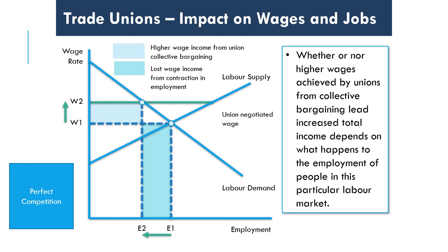Because the light blue area is slightly smaller than the darker blue area, economists would suggest that in perfect competition the impact of unions does not have a positive impact — it reduces employment, creates excess supply of labour, and reduces total wage income.